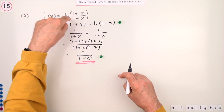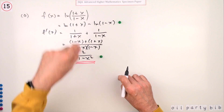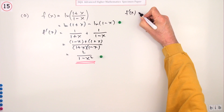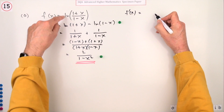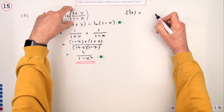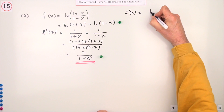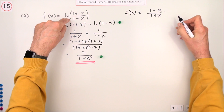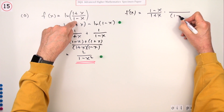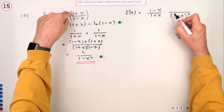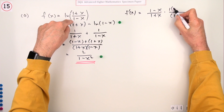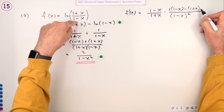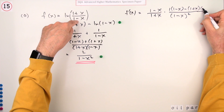If you had neglected to use that log property and just differentiated the logarithm straight away, it would have been messier. You'd take the derivative of ln((1−x)/(1+x)) by writing 1 over the fraction — i.e., the reciprocal — so (1−x)/(1+x), then use the quotient rule: square the bottom, differentiate the top giving 1, leave the bottom alone, minus leave the top alone and differentiate the bottom giving −1.